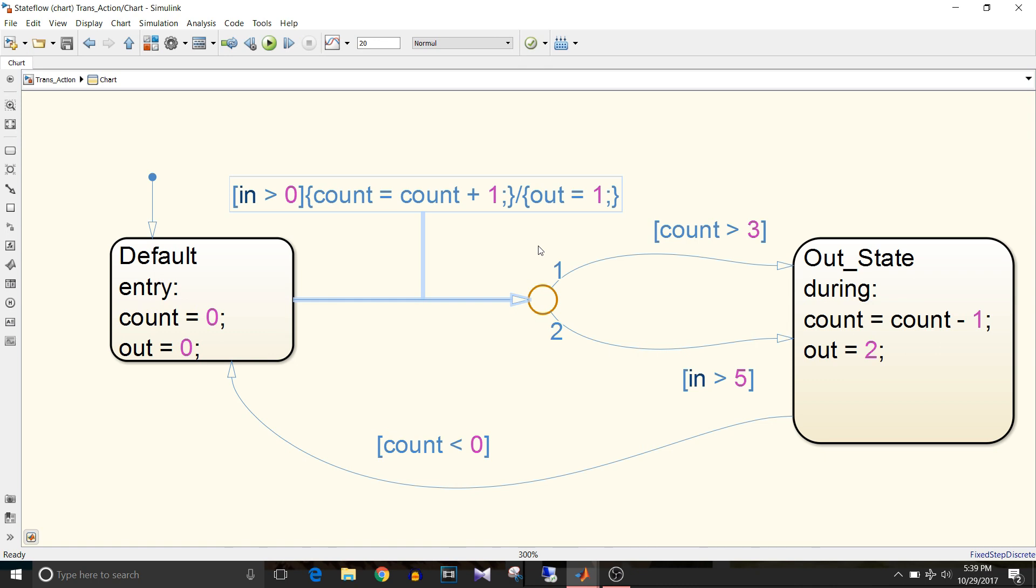The transition action takes place only when the state from which the path is coming becomes inactive and goes to another state at which it ends. In simple words, in this case there should be a complete transition from default state to this out state. When either count greater than 3 or input greater than 5 becomes true, the path completes and the transition action takes place.